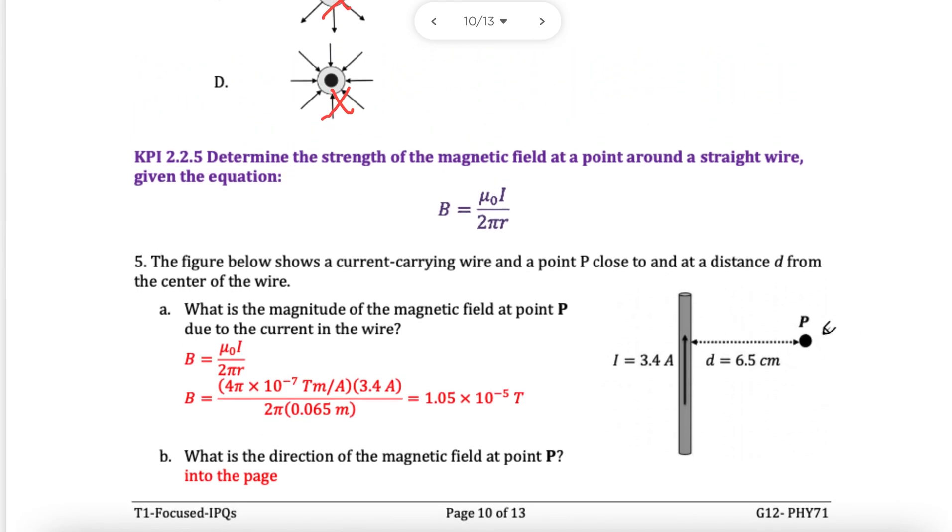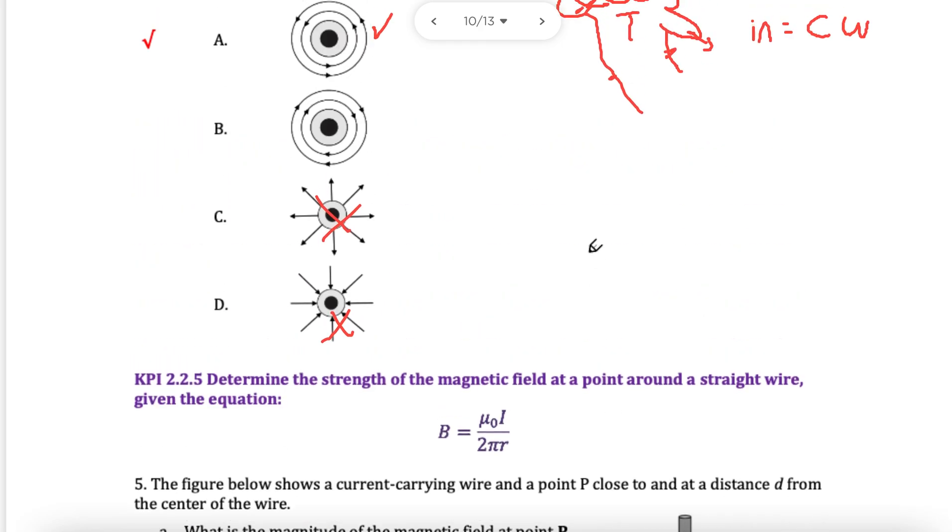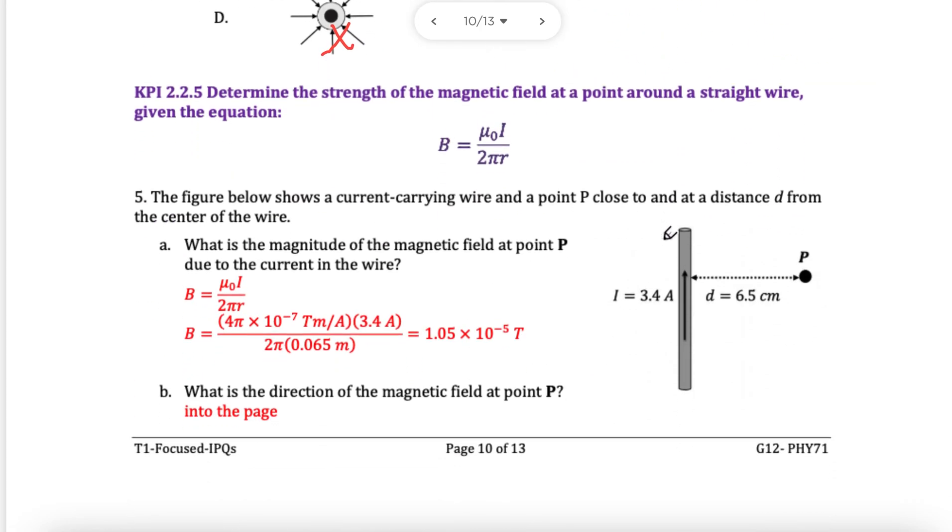You will be asked to find the direction of the field when it's going up or down. If it's going up or down, or even left or right, your two choices will be into the page or out of the page. Only then, if the current is coming out or into the page, will you pick clockwise or counterclockwise, because they're perpendicular.